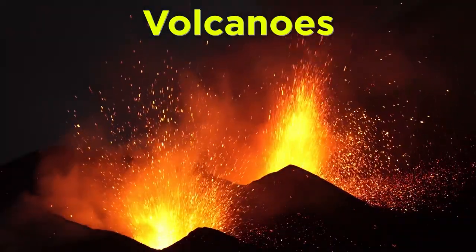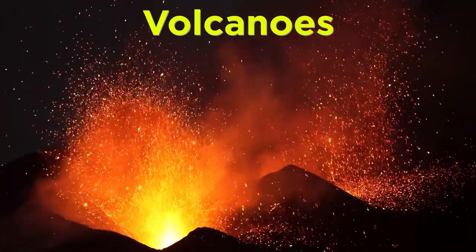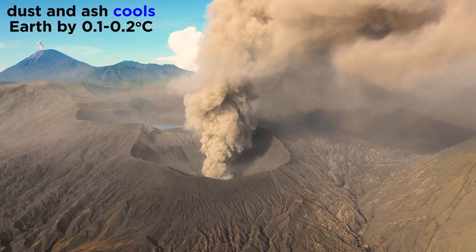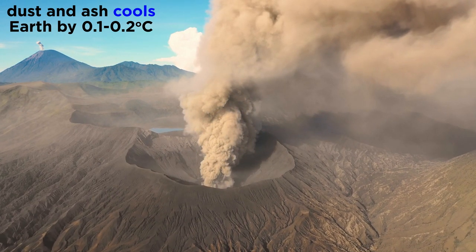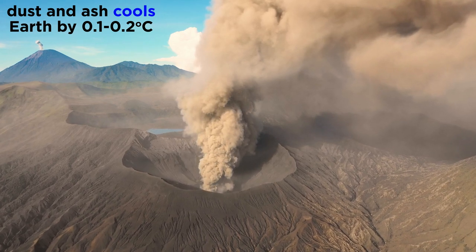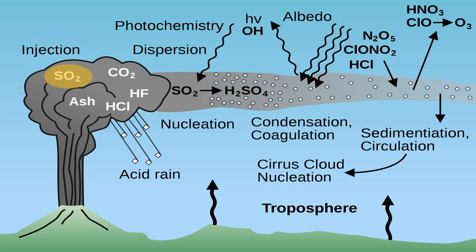First up, volcanoes. We learned about these in some detail over in the geology series. So what do they have to do with climate? Perhaps surprisingly, in the grand scheme of things, volcanoes have a short-term cooling effect of about 0.1 to 0.2 degrees Celsius, as they pump out dust and ash which can temporarily block out sunlight. Volcanoes also spew out sulfur dioxide gas, which when combined with water vapor and dust in the atmosphere forms sulfate. Sulfate aerosols actually reflect sunlight away from the Earth's surface, and so their cooling effect outweighs warming caused by greenhouse gases that are also emitted during eruptions.